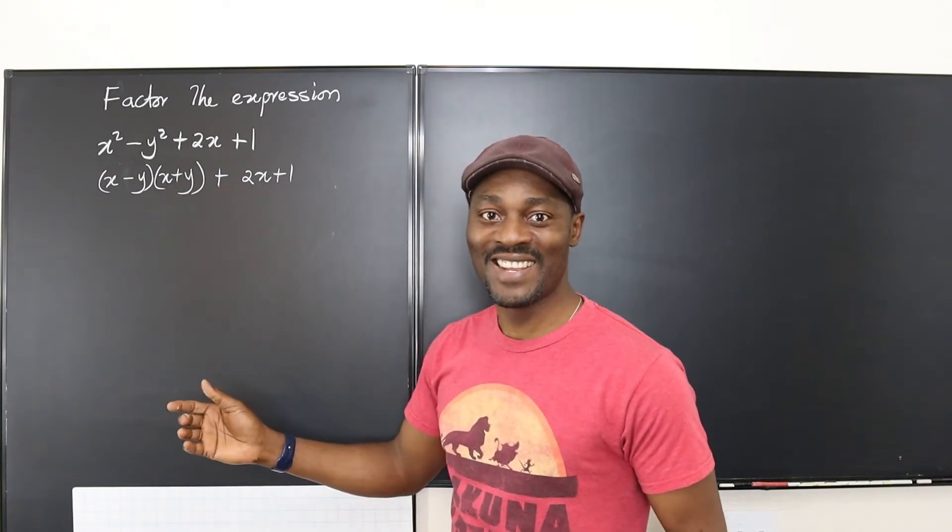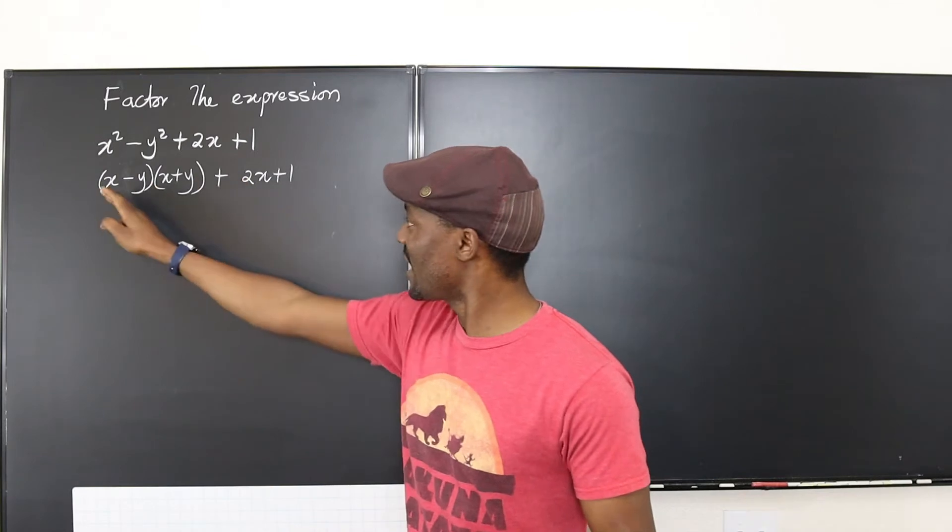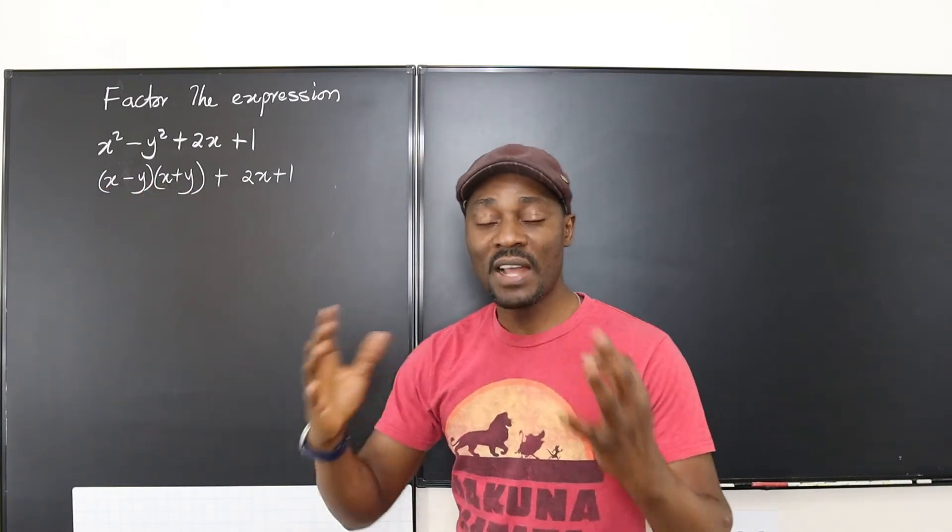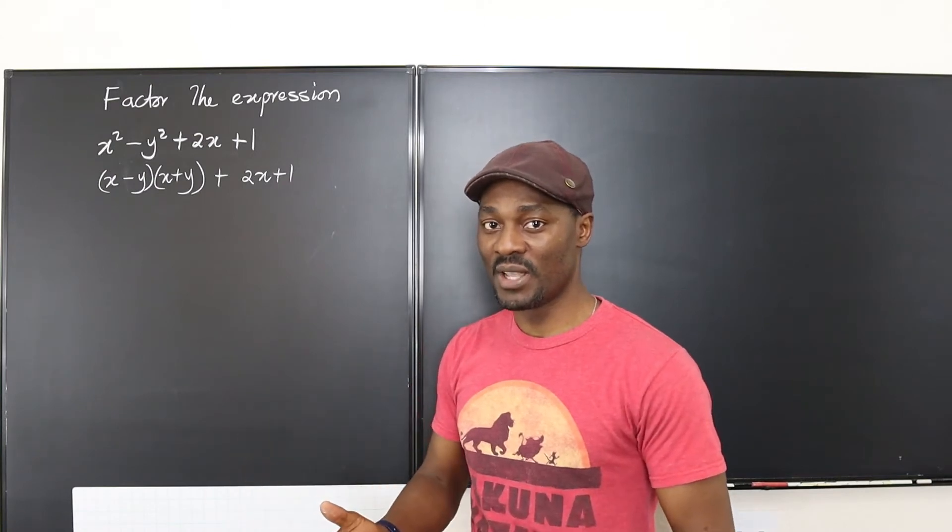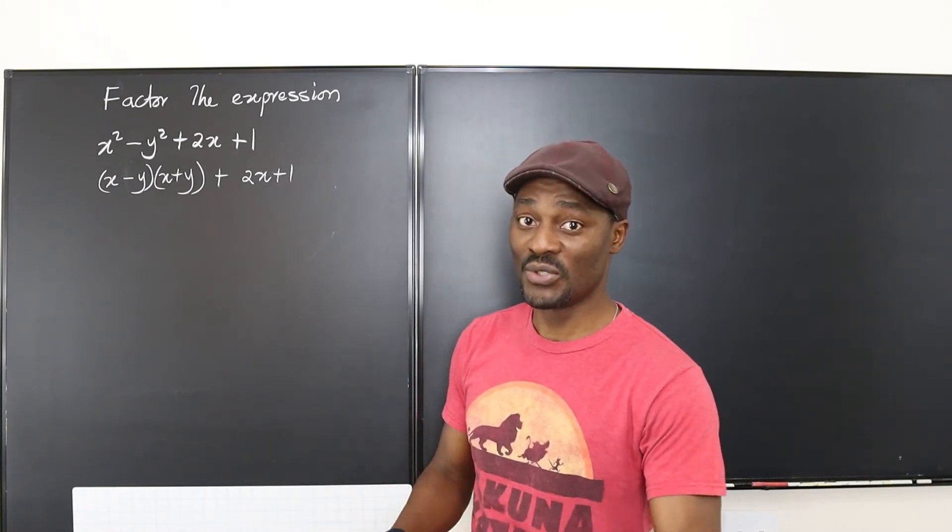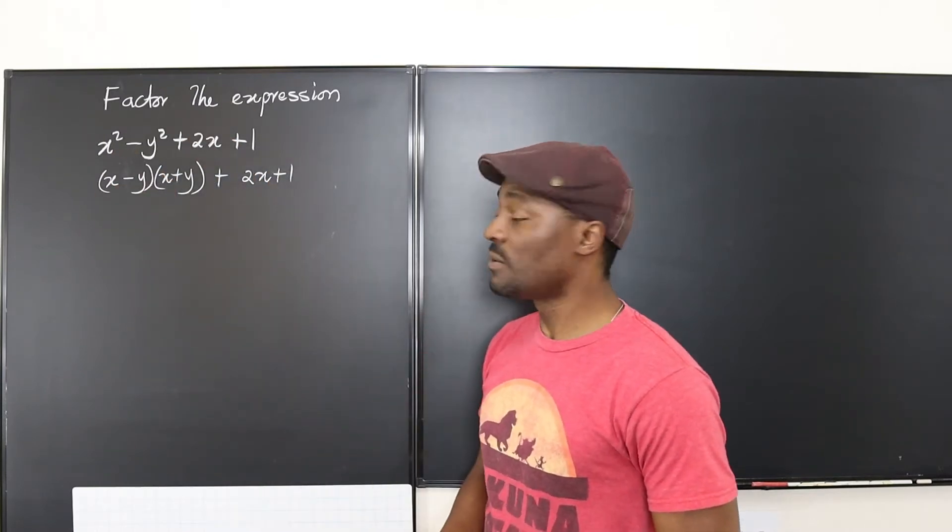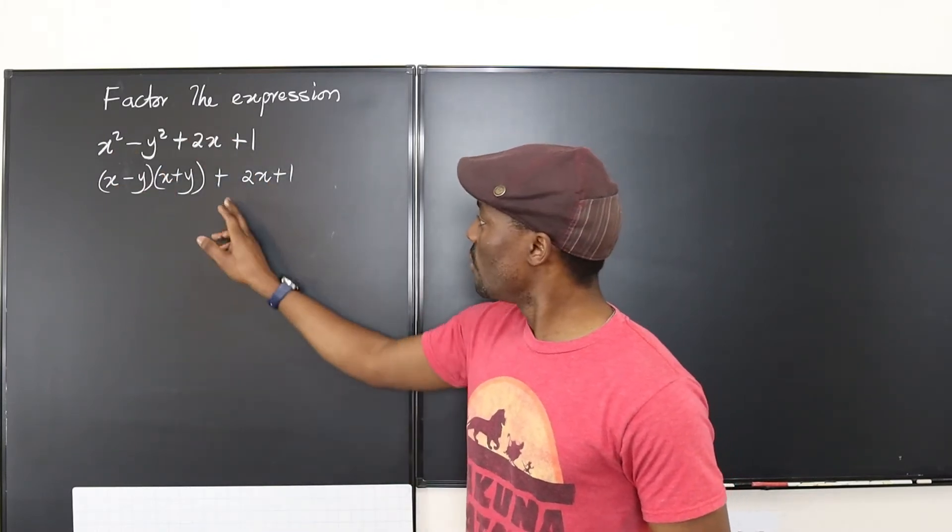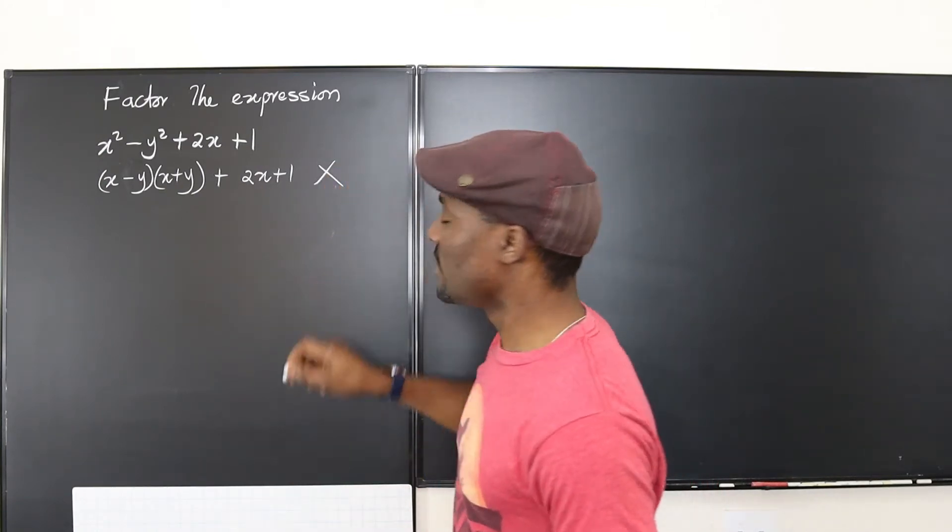This is not the kind of expression you have when you factor an expression. You want to have only parentheses multiplying the terms. We need that to be able to solve complicated expressions like this if they become equations. So difference of two squares did not help us.